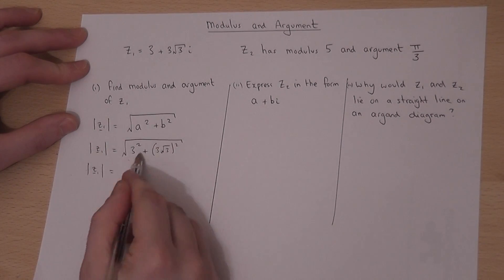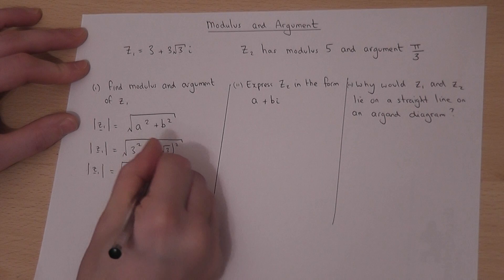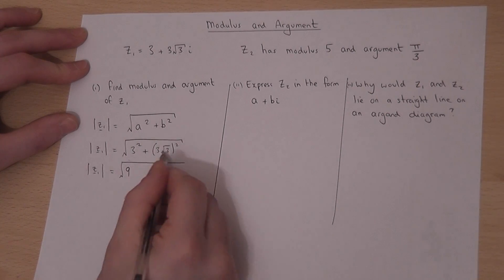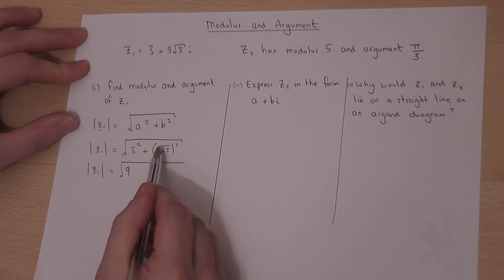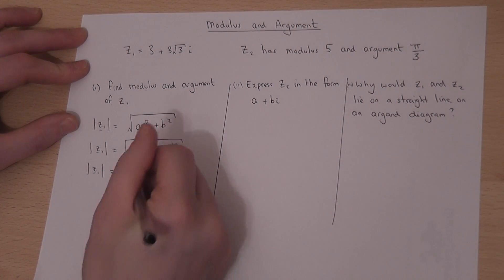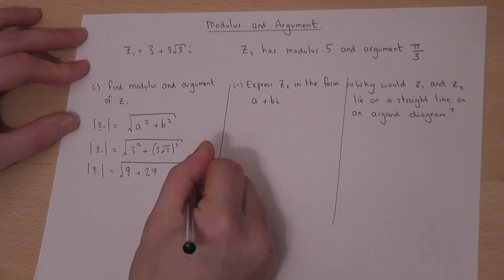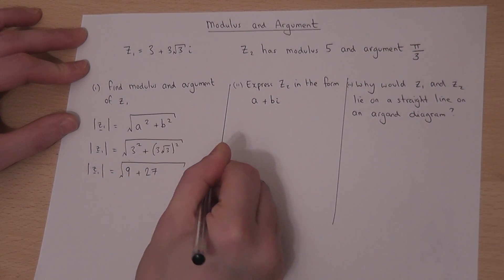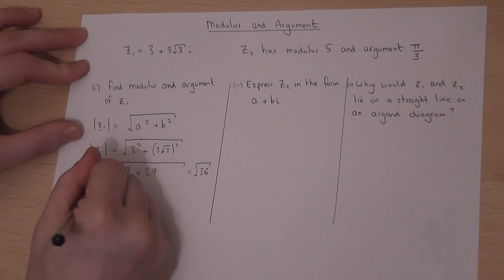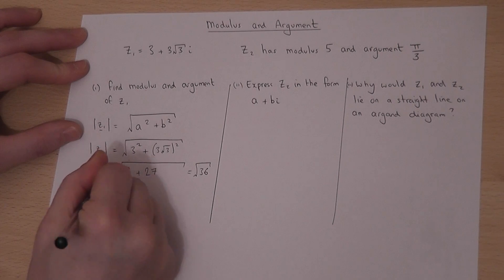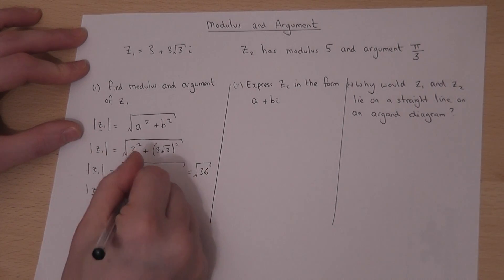Well, 3 squared is 9. 3 times root 3 squared is 9 times 3, which is 27. So that's the square root of 36. Therefore, the modulus of z1 is 6.